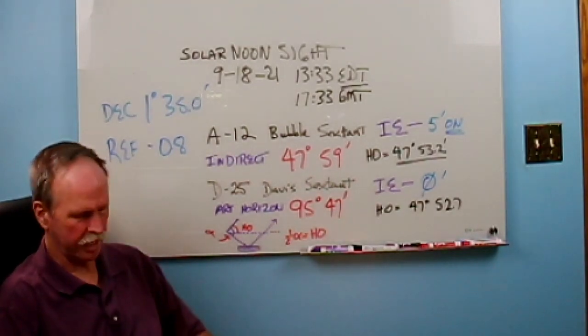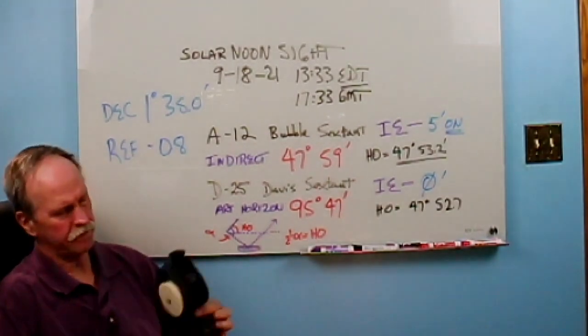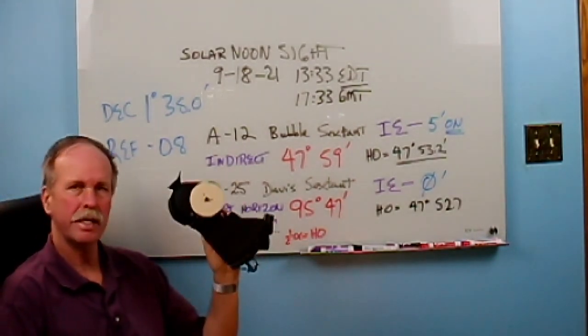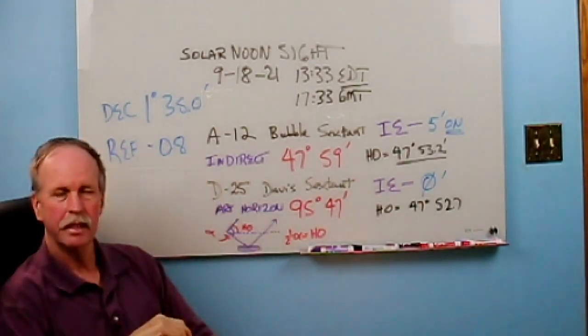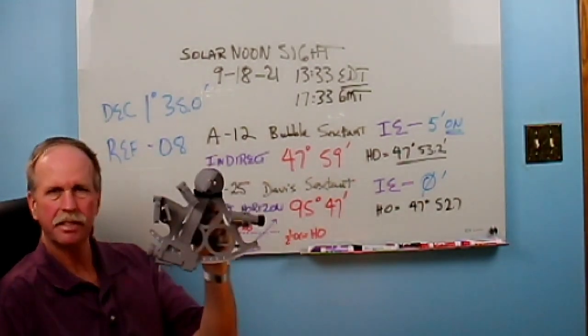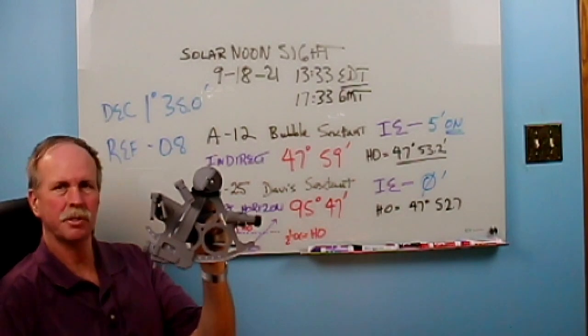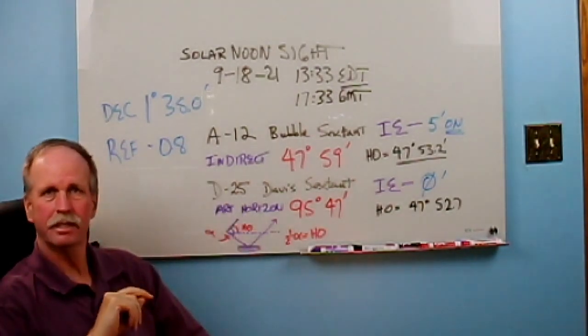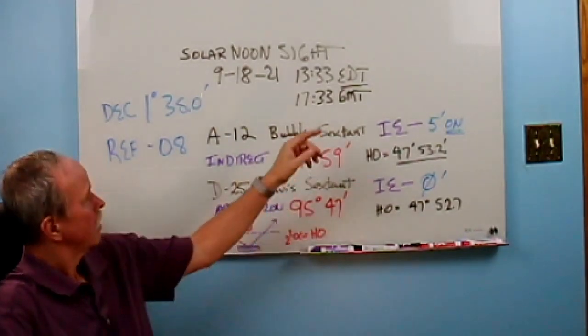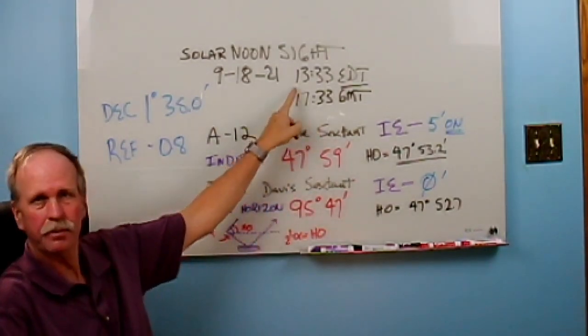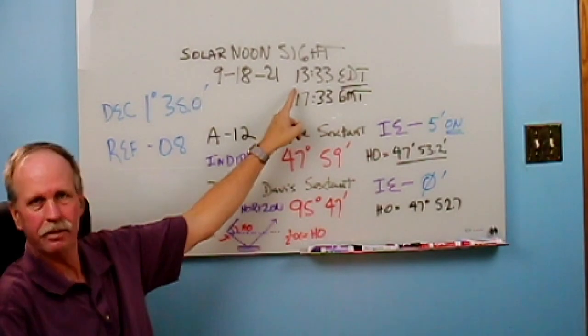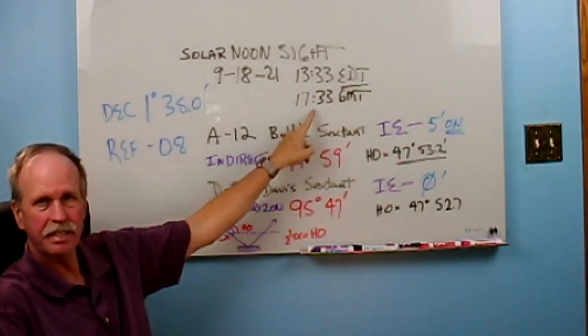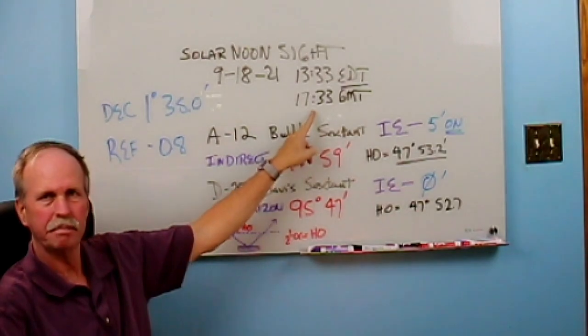So today I went outside and I did two noon sights. The first was with the Link A12 bubble sextant, and then I used a Davis Mark 25 nautical sextant. Now, solar noon today, September 18th, 2021, was at 1333 hours Eastern Daylight Time, and that's 1733 Greenwich Mean Time.